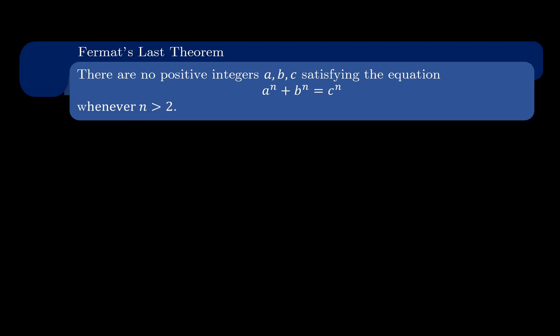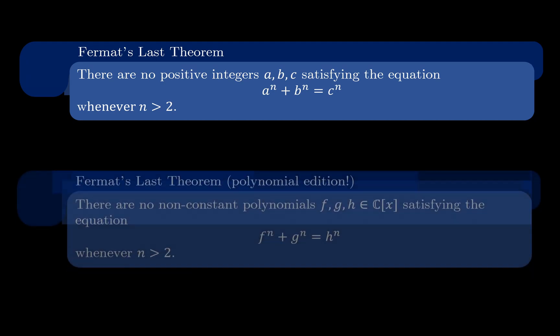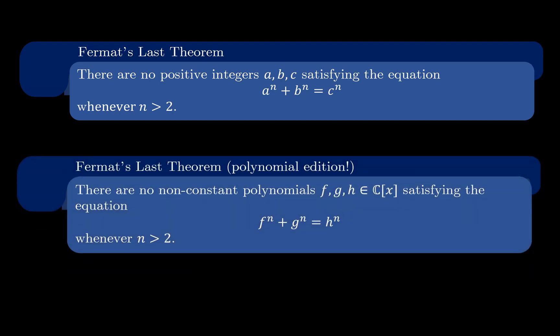This theorem is way too hard to prove in a YouTube video, so instead we'll be proving the polynomial version of this theorem, which states that there are no non-constant polynomials f, g, and h with complex coefficients such that f^n + g^n = h^n whenever n is greater than 2.